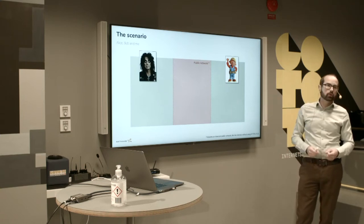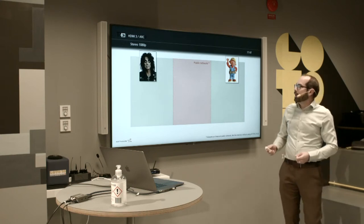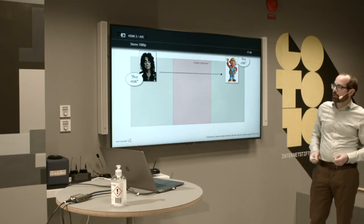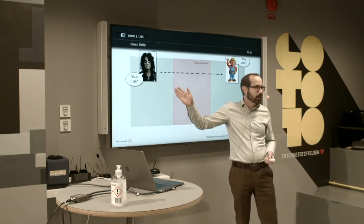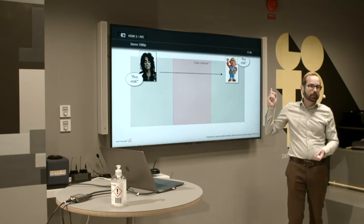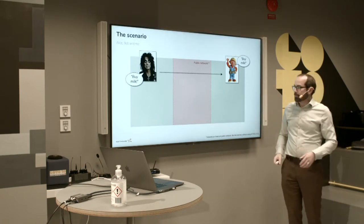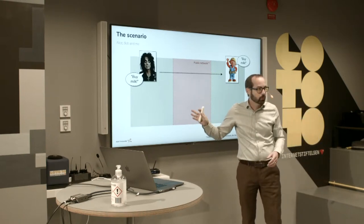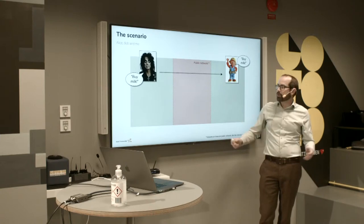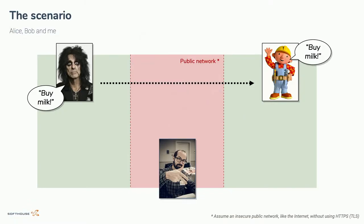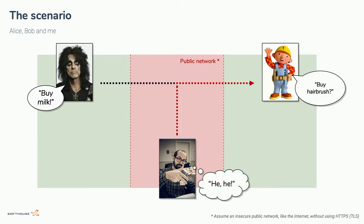Alice wants to communicate securely with Bob. She wants to send a message reminding Bob that he needs to buy milk on his way home. But since this is over an insecure public network, this message is not protected. You could place someone in between — in this case I'm placing myself — and I can read this message and, if I'm in a malicious mood, change it to something else and Bob wouldn't know.